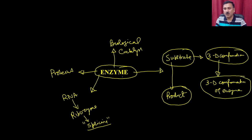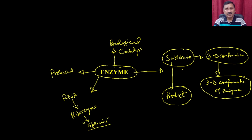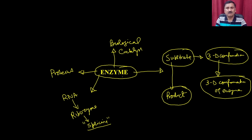In the previous module, we discussed how enzymes recognize the substrate and how they utilize different types of properties. They have geometrical constraints, stereochemical constraints, and functional groups which are responsible for substrate recognition as well as the conversion of the substrate into the product.